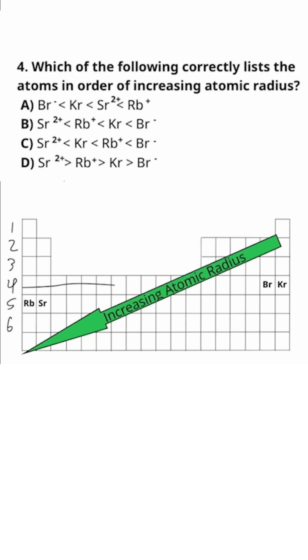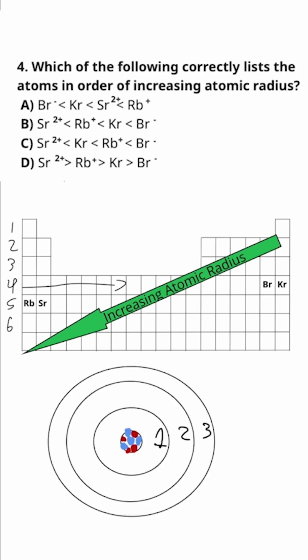For example, the atoms in this row have valence electrons in the fourth energy level. As you increase the energy level, you are getting further away from the nucleus of that atom. So that's why the radius increases as we go down the periodic table.